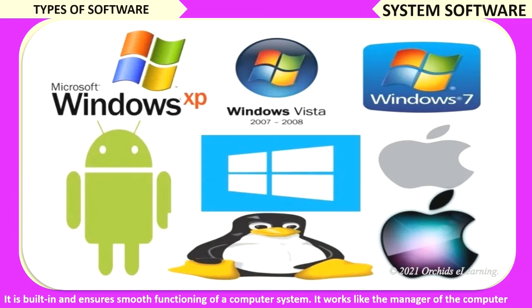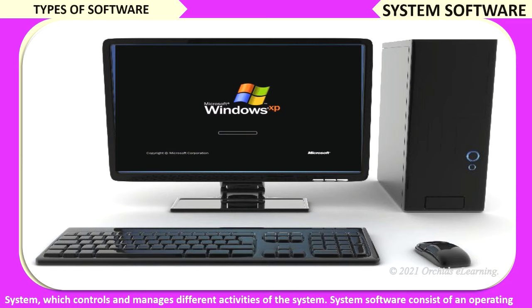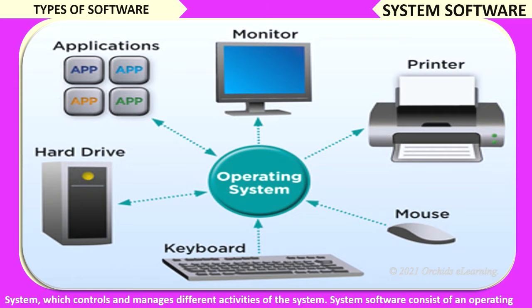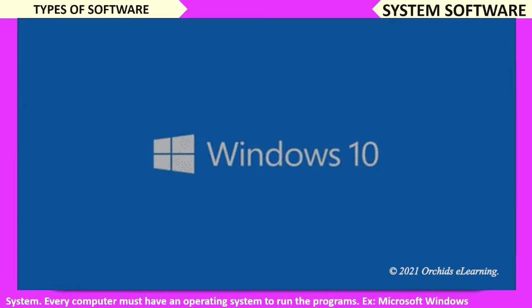System software is built in and ensures the smooth functioning of a computer system. It works like the manager of the computer system, which controls and manages different activities of the system. System software consists of an operating system. Every computer must have an operating system to run the programs. Example: Microsoft Windows.